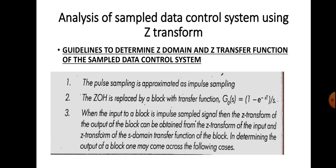The Z-transfer function is also called the pulse transfer function. The first guideline is that pulse sampling is approximated as impulse sampling, so the sampling technique used will be impulse sampling. The second guideline is that if there is any zero-order hold circuit, we can replace it with its transfer function: G0(s) = (1 - e^(-sT)) / s, which is an s-domain value.